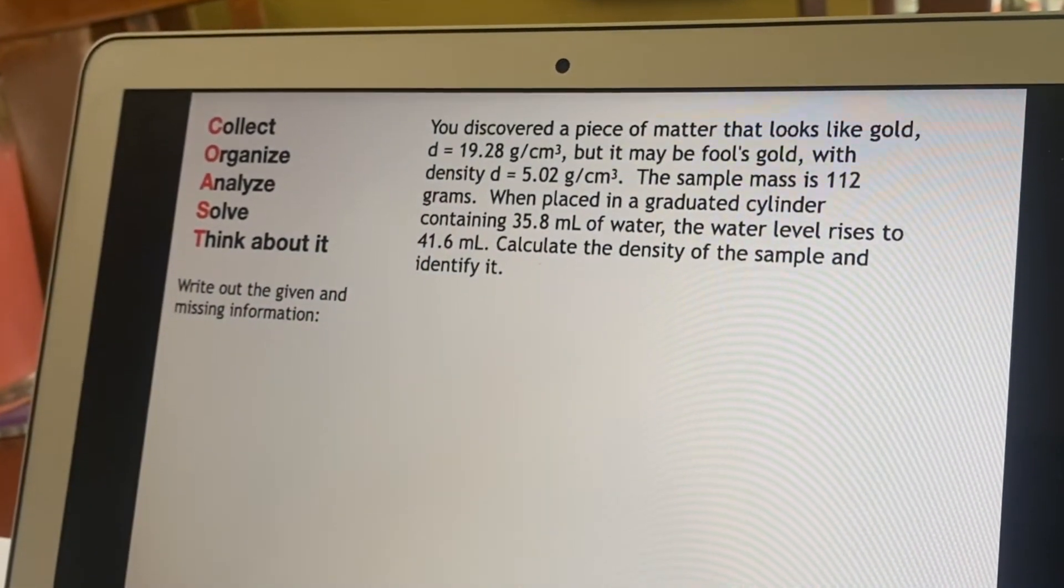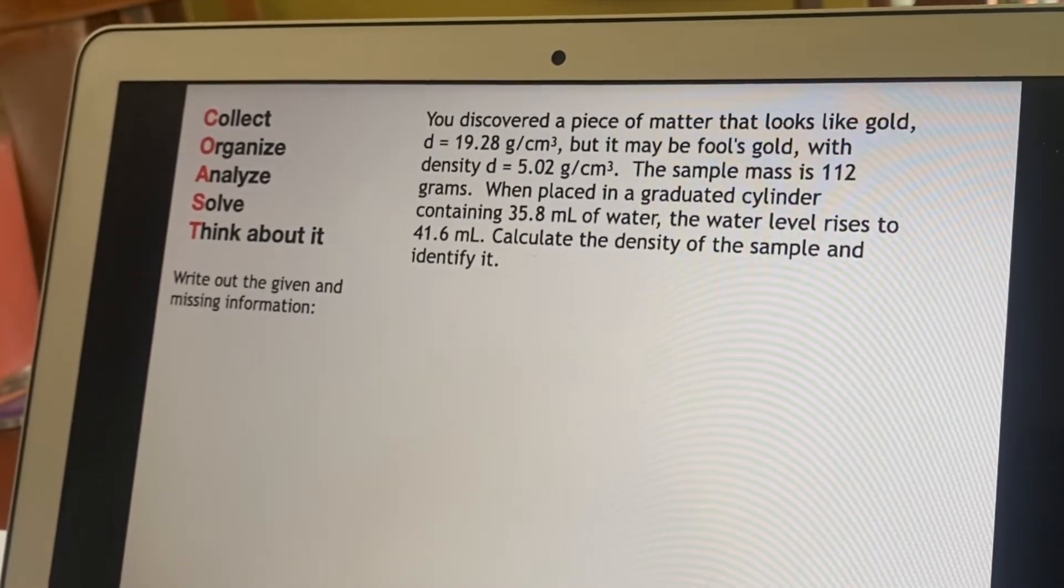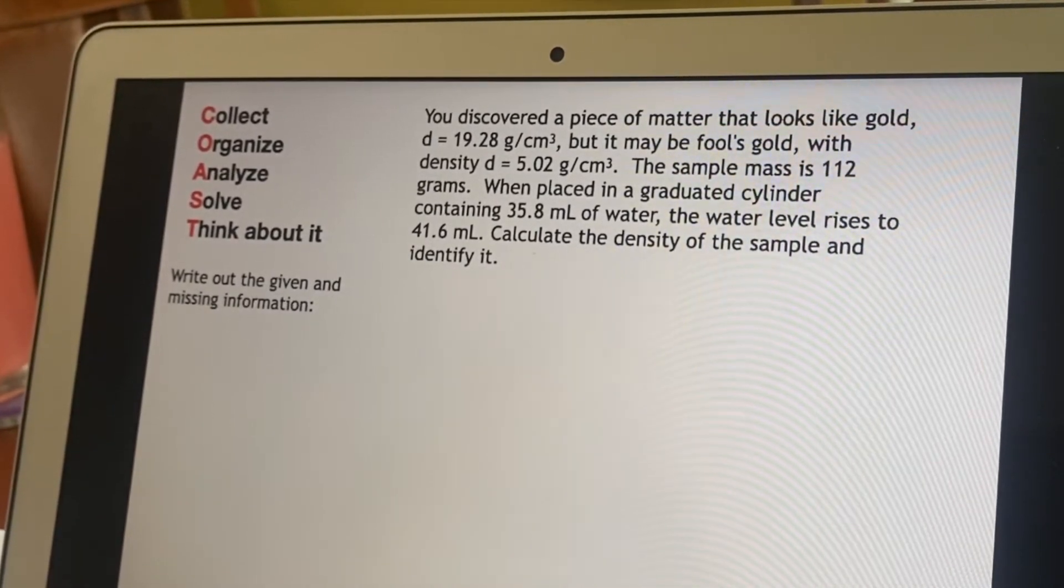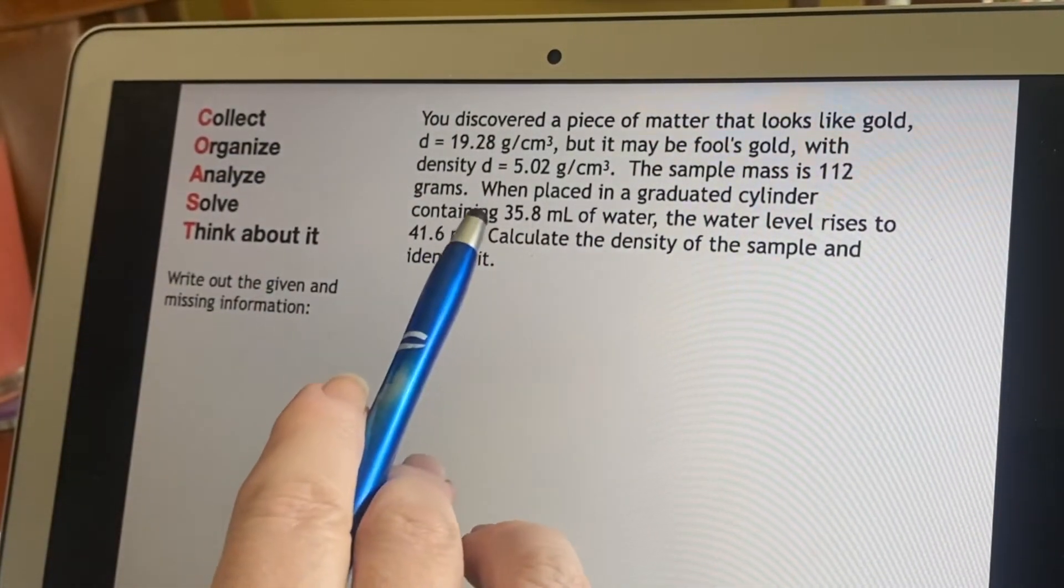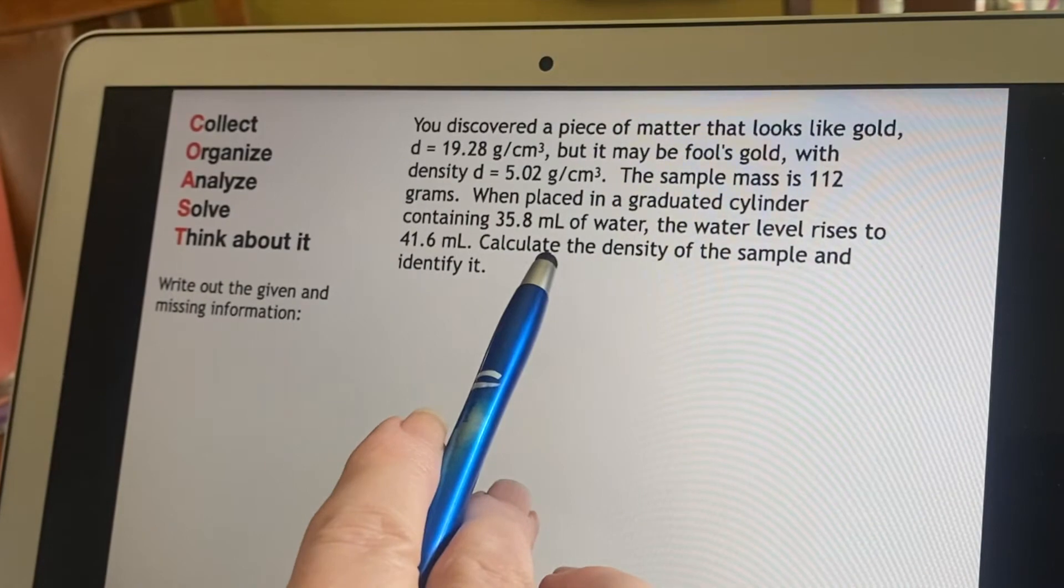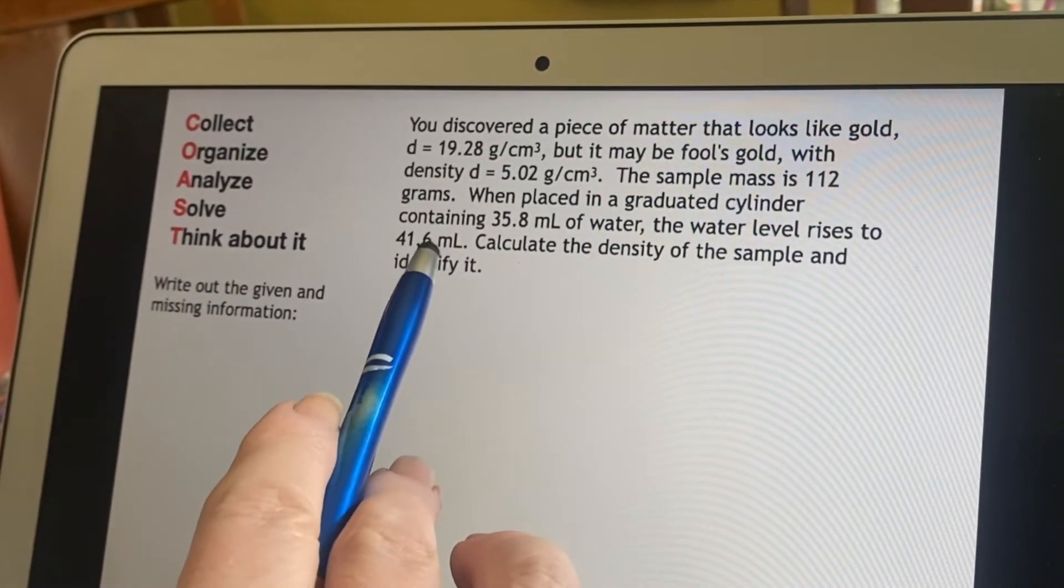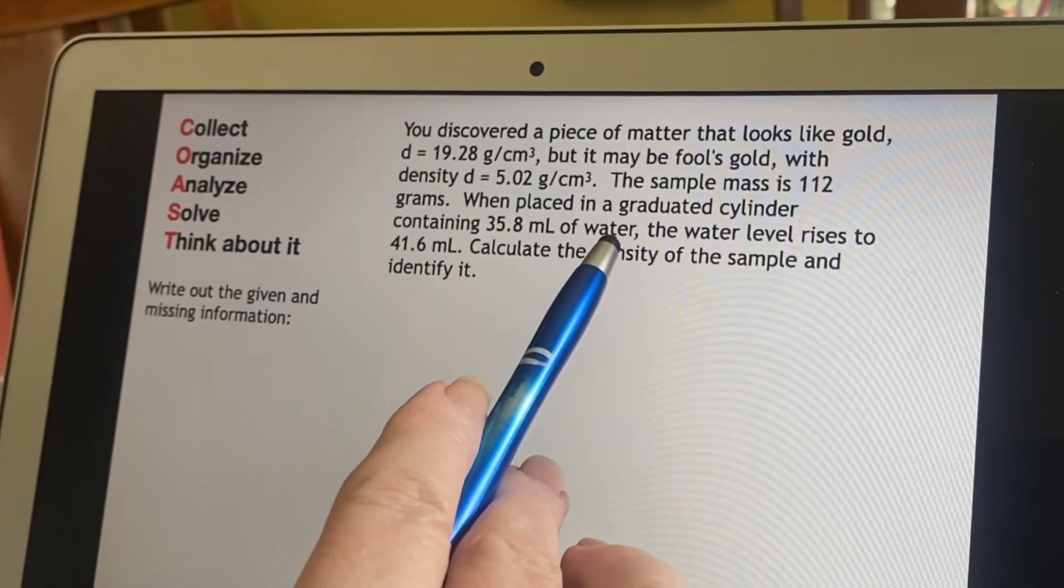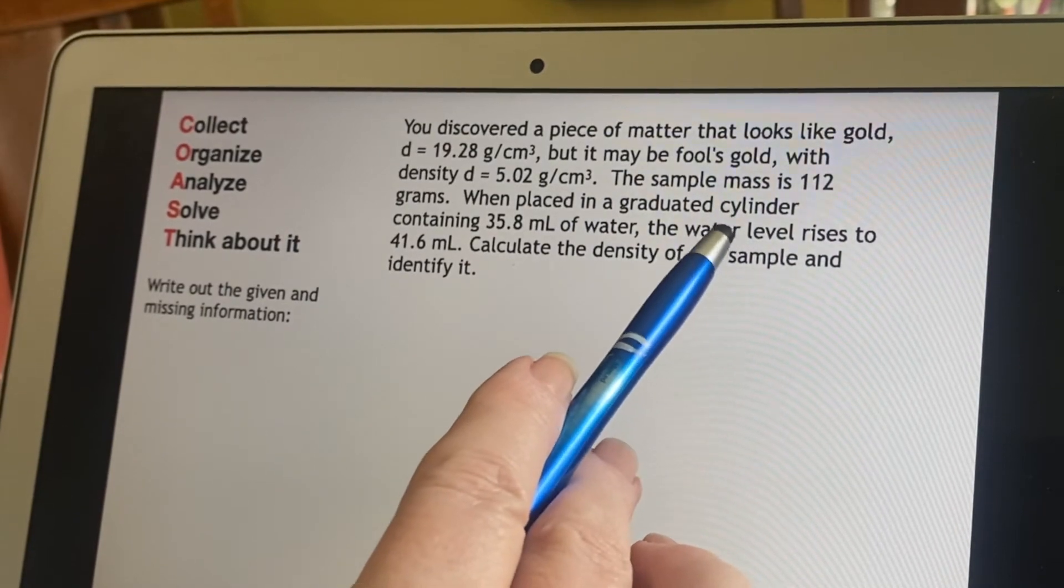You're able to go put the sample on a scale and find out what its mass is. And then this other piece of information, when placed in a graduated cylinder containing a certain amount of water, the water level rises. That means I can find out what the volume of the object was.